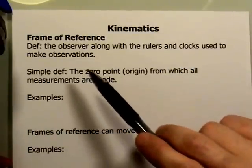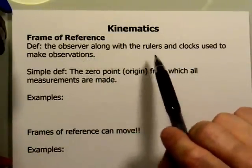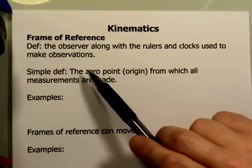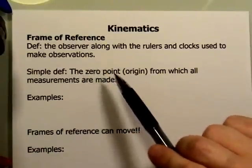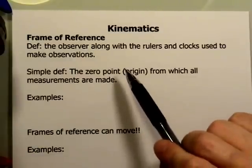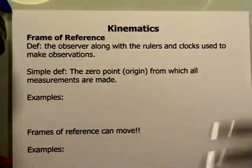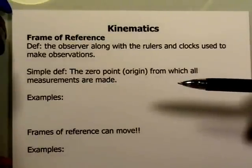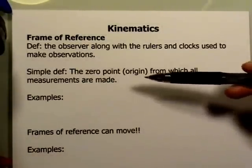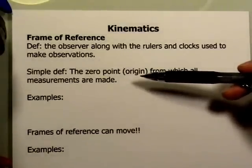Frame of reference is something that virtually everybody intuitively understands, but they don't necessarily put it in those words. The definition of frame of reference is the observer, along with the rulers and clocks they use to make their observations. Another way of thinking about it is as the origin — the point from which you make all of your measurements.